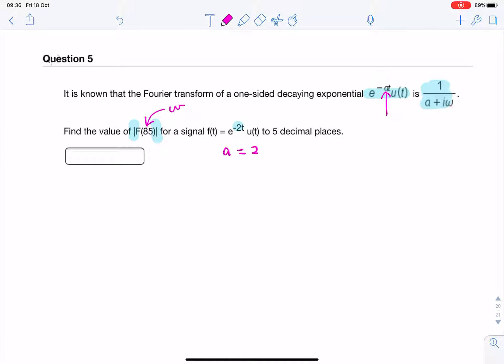So, we start with what we know, f of omega is equal to 1 over a plus i omega.